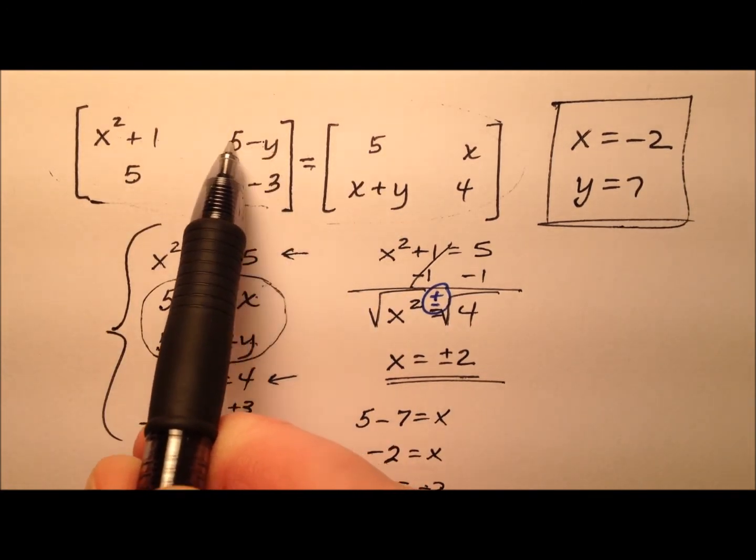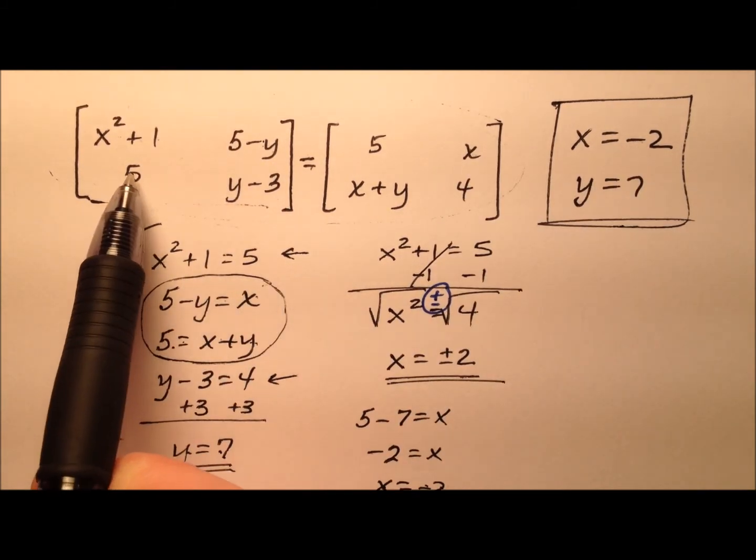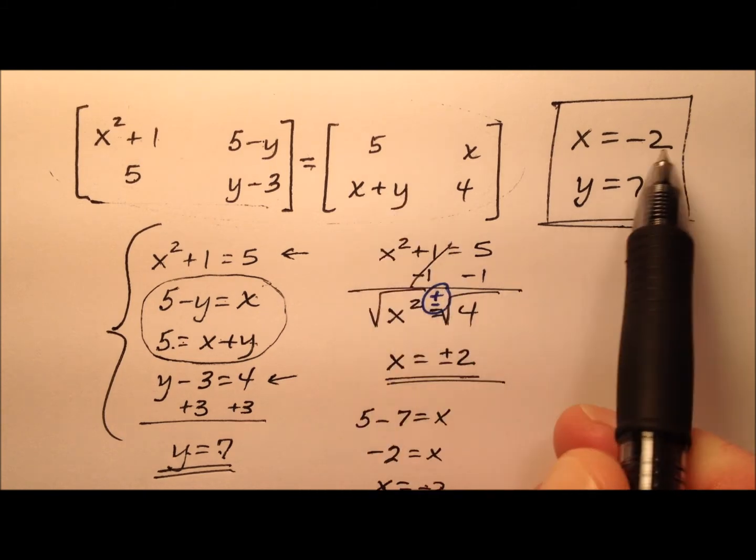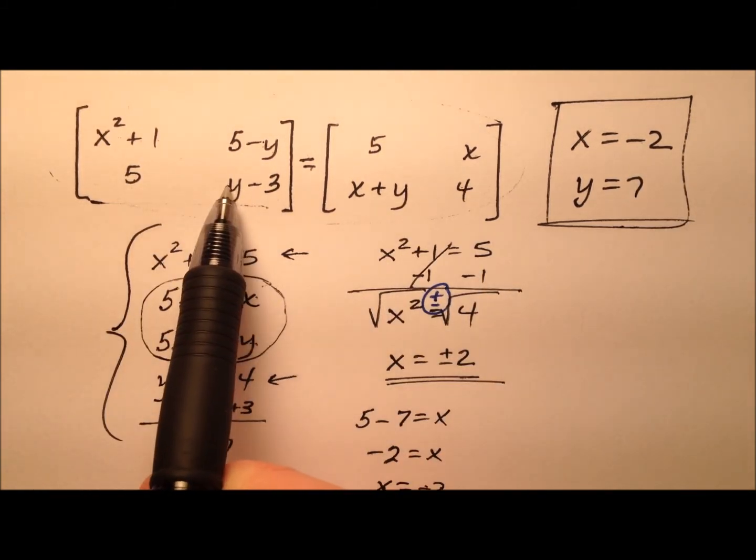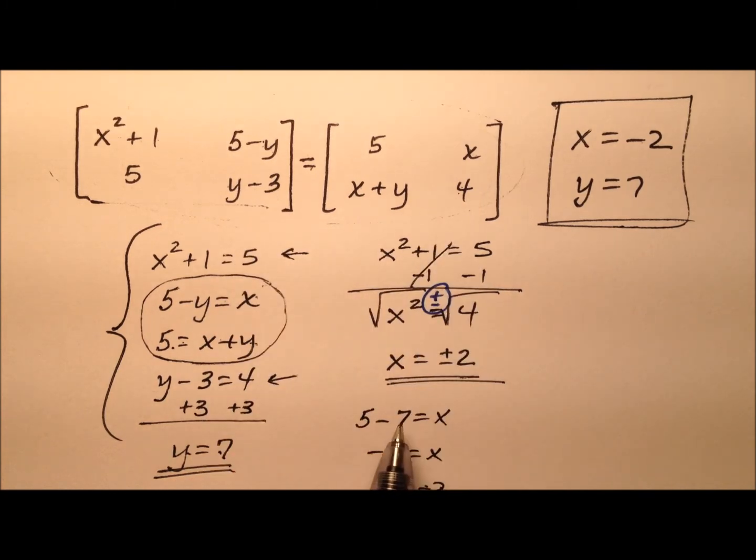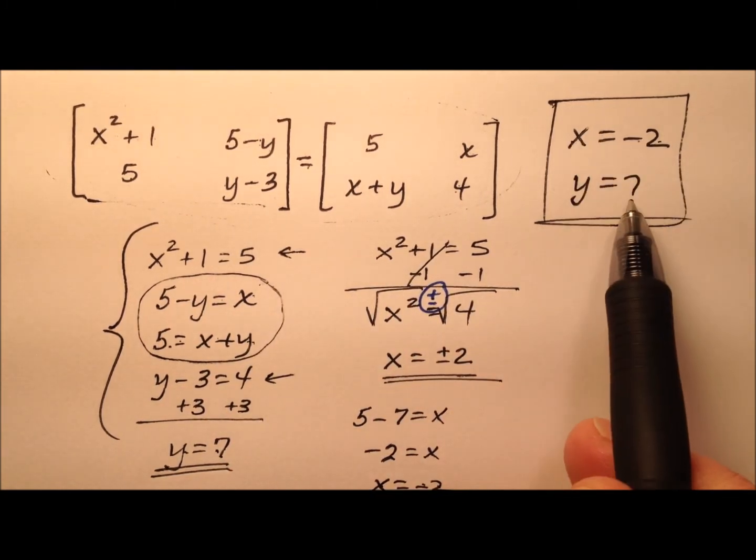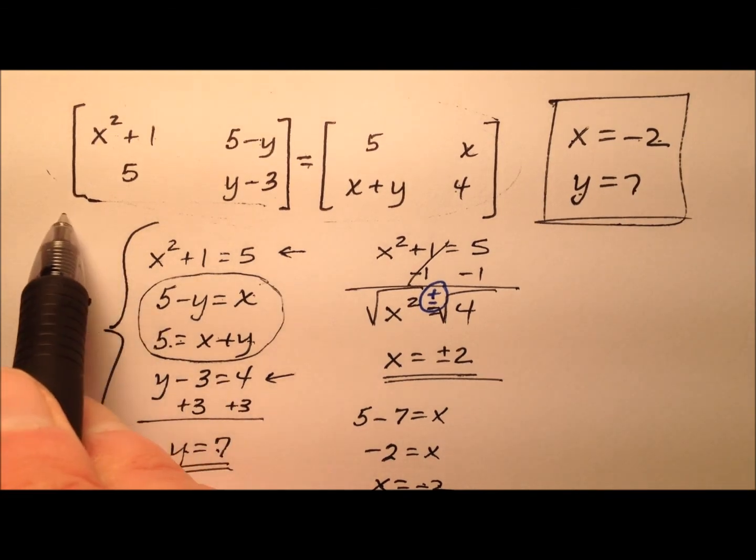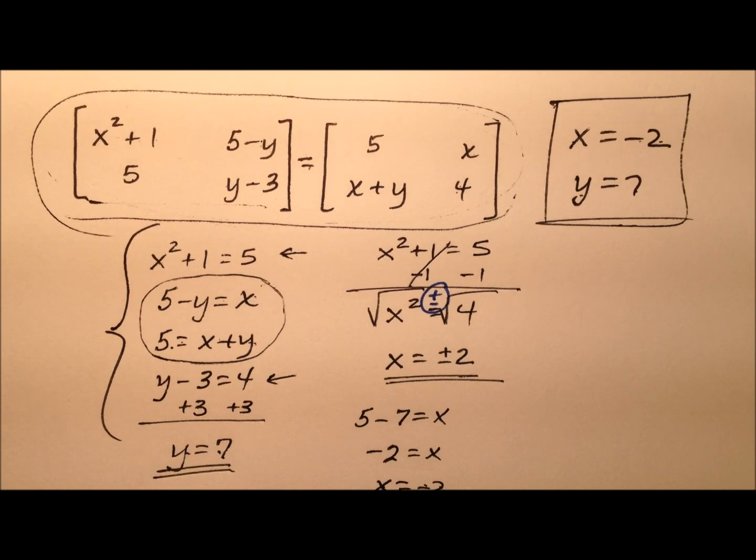Five minus y: so five minus seven is negative two, and x was negative two. Five equals x plus y: so when I add them, I get five. And y minus three is four: seven minus three is four, and that's true as well. So we can see that using negative two for x and seven for y does create two matrices that are indeed equivalent to one another.